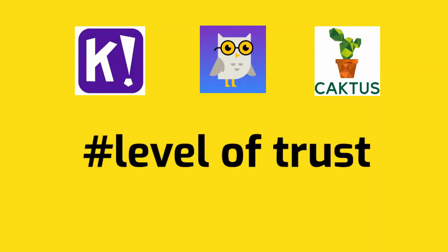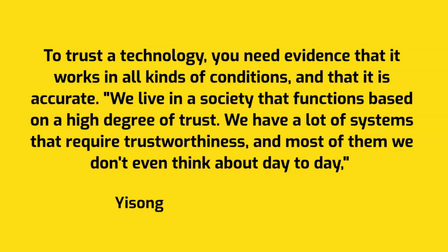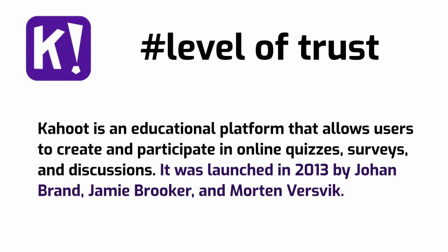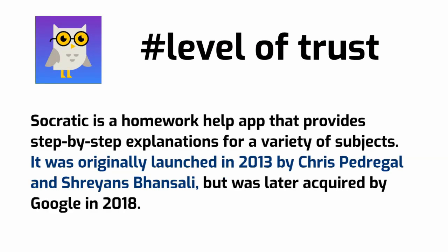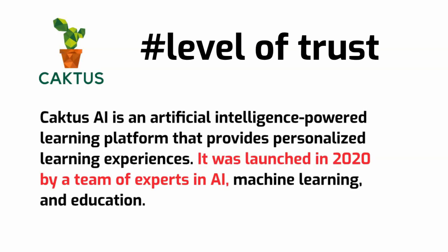Level of trust. To trust a technology, you need evidence that it works in all kinds of conditions and that it's accurate. We live in a society that functions based on a high degree of trust, with a lot of systems that require trustworthiness. Kahoot is an educational platform that allows users to create and participate in online quizzes, surveys and discussions — launched in 2013. Socratic is a homework help app that provides step-by-step explanations for a variety of subjects, also originally launched in 2013. Cactus AI is an artificial intelligence powered learning platform launched in 2020 by a team, but we don't have any names.